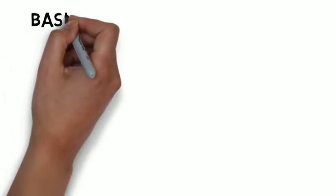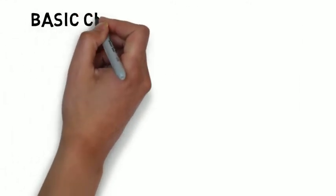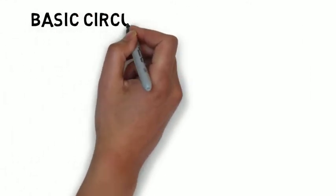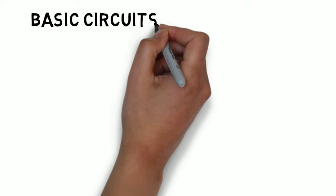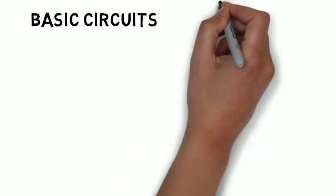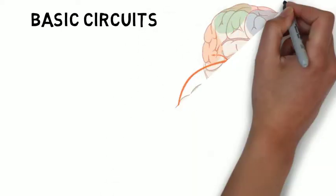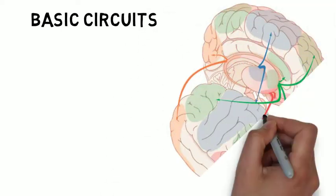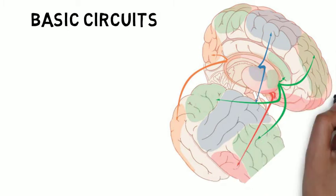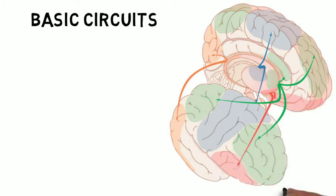The basal ganglia are associated with a variety of functions including motor control, procedural learning, eye movements, cognitive and emotional functions. These various functions are accomplished by distinct but interconnected circuits through the basal ganglia.